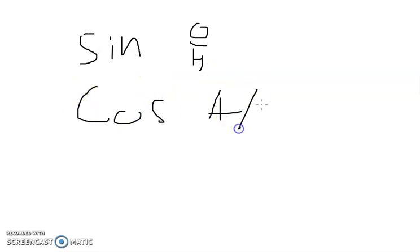Today I went over some sine and cosine basics with my student. Basic sine equals opposite over hypotenuse, cosine equals adjacent over hypotenuse, tangent equals opposite over adjacent.